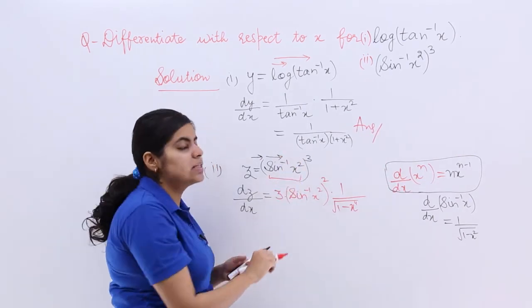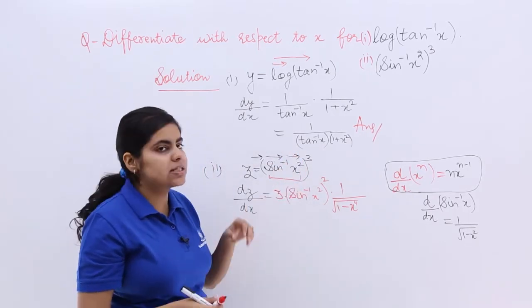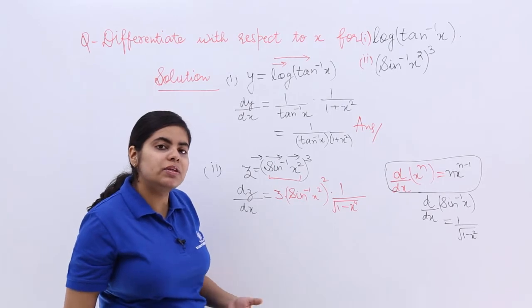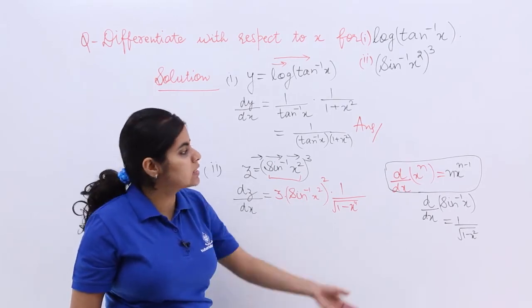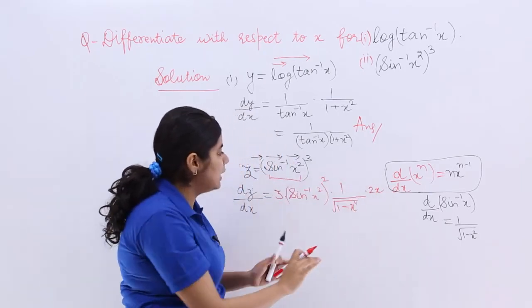But again you came inside. You saw that this is still not complete. It has x square. Now what is the differentiation of x square with respect to x? Using the same formula, it is nothing but 2x. So this has been done.